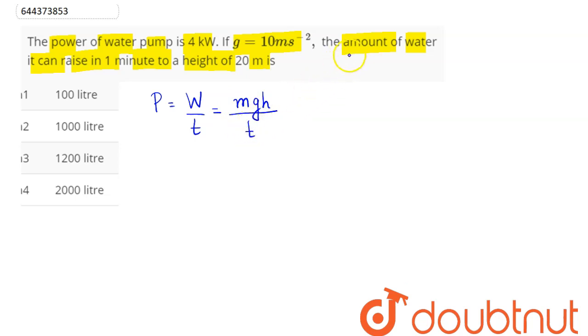Now, amount of water is being asked in the question, that is volume. So we can say mass can be written as density into volume, into g into h divided by t. Hence volume can be written as power into time divided by density into g into h.